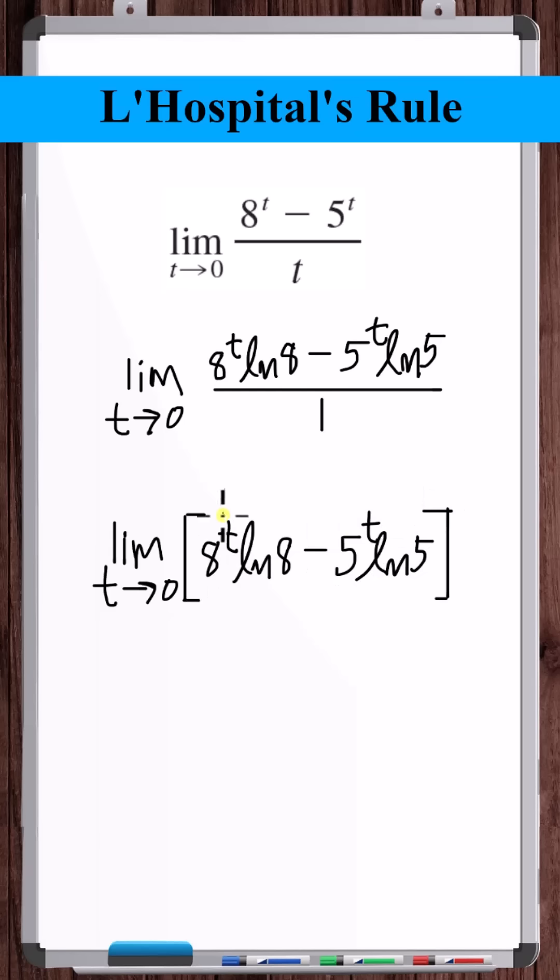Plugging in 0, 8 to the t approaches 1, 5 to the t approaches 1, so this limit approaches natural log of 8 minus natural log of 5.